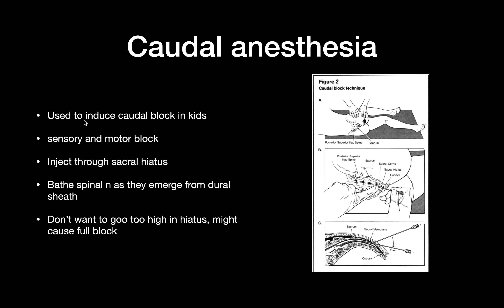Caudal anesthesia is used for a caudal block, usually in children, because it provides a complete sensory and motor block. If you're performing any kind of procedure on a child, they won't be able to kick. You insert the needle through the sacral hiatus, where the spinal nerves emerge, to bathe them as they leave the dural sheath. You do not want to go too high in the hiatus because that might cause a full block or paralysis.